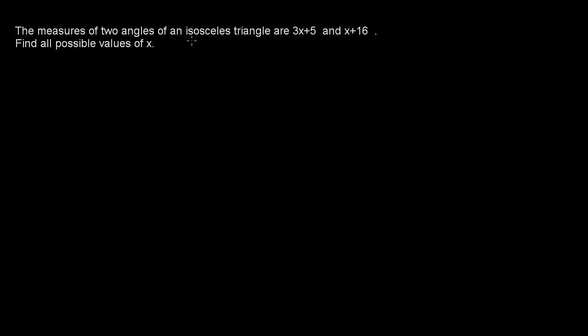The measure of two angles of an isosceles triangle are 3x plus 5 degrees and x plus 16 degrees. Find all possible values of x. So let's think about this.